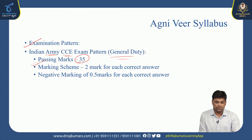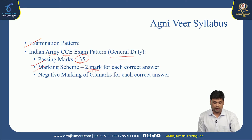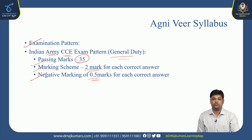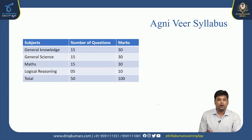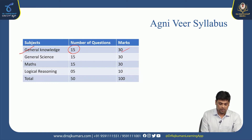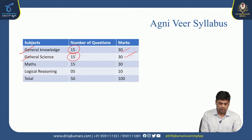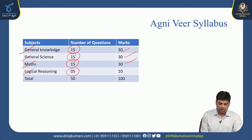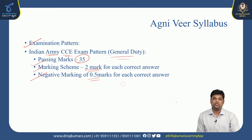Passing mark is 35. Marking scheme: 2 marks for each correct answer, negative marking 0.5 for each incorrect answer. From GK, 15 questions carries 30 marks. From general science, 15 questions carries 30 marks. From math, 15 questions carries 30 marks. Logical reasoning, 5 questions carries 10 marks. Total: 50 questions, 100 marks — that is the format of General Duty.